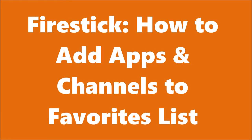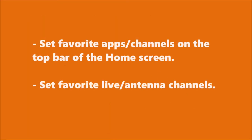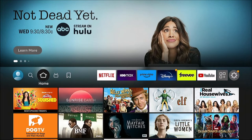In this video we're going to figure out how to add apps and channels to the favorites list of your Amazon Fire Stick. There are two different sets of favorites: one where you set favorite apps and channels on the top bar of the home screen, and one where you set favorites for your live and antenna channels. We're going to cover both of those in this video.